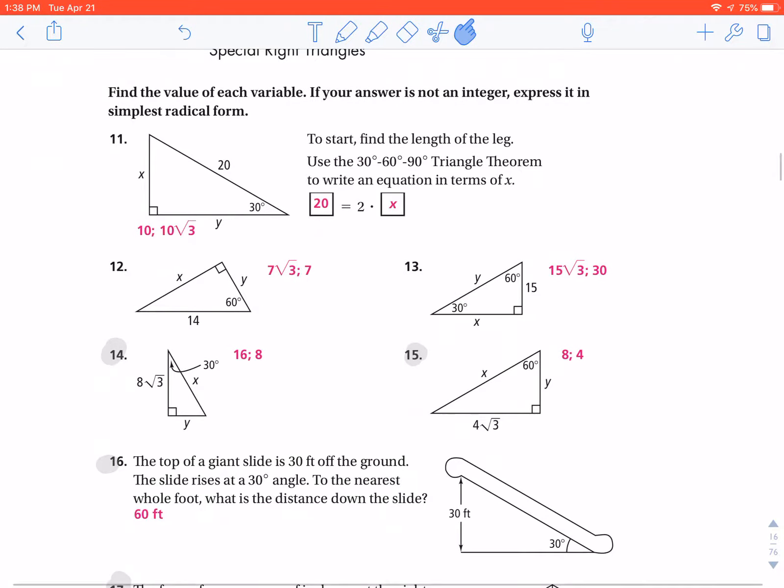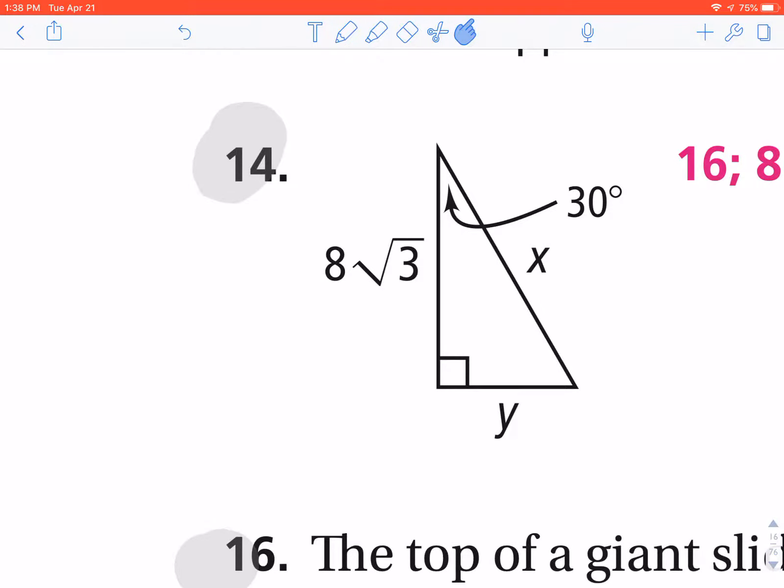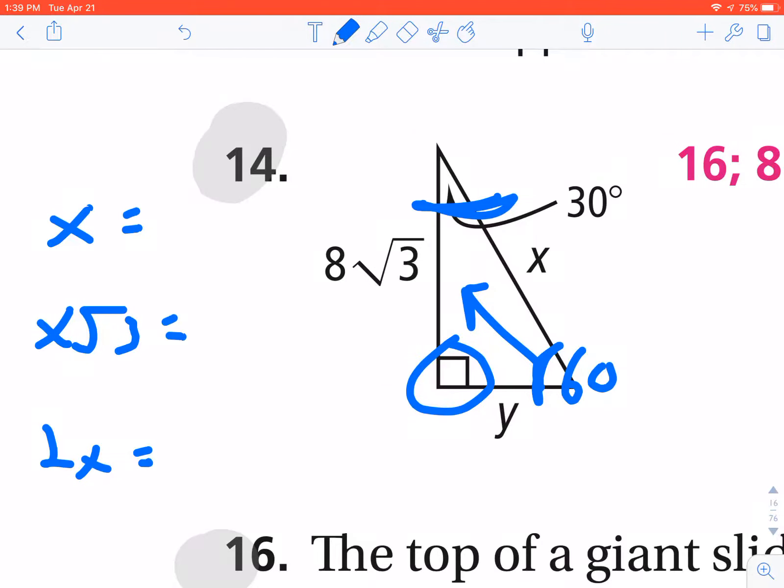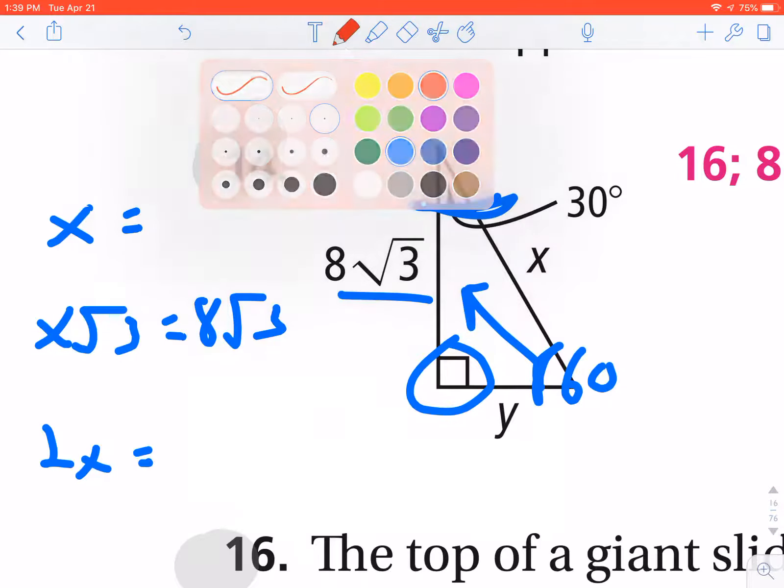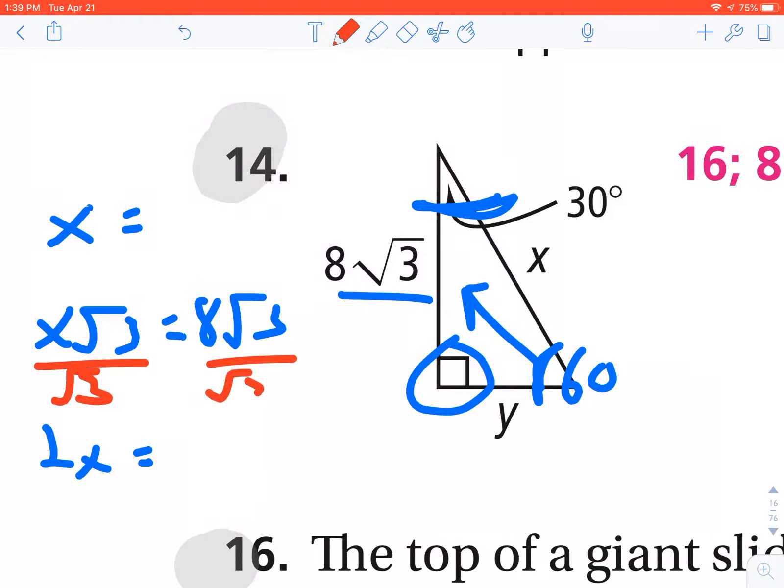Moving on here now to number 14. 14 is a 30-60-90 triangle. So I'm going to make my table for that. X, X radical 3, and 2X. And the part that is actually given to me is opposite of this angle, which this angle is 30, that angle is 90. That has to be 60 degrees. So the 8 radical 3 is my long leg. This is the worst-case scenario for you when I give you the long leg because it requires the most amount of algebra to solve. Well, simply divide both sides by radical 3 to solve for X, and they both cancel, which tells me my short leg is 8. So Y would be 8. And then to find the hypotenuse, you take whatever the short leg is, which in this case is 8, and you multiply it by 2 to get X to be 16.